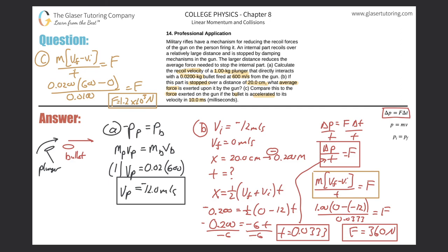That makes sense — the bullet started from rest and moved to the right, so the force exerted on it must also point to the right, giving a positive value. All the signs worked out beautifully. Thank you so much for tuning in. Please remember to hit the subscribe button, and feel free to leave suggestions in the comments section below. Take care.